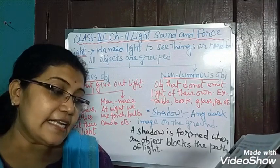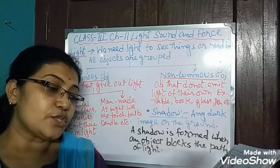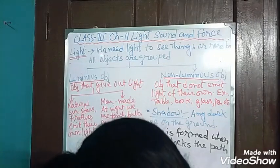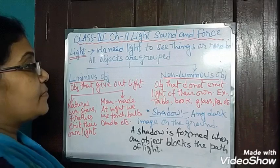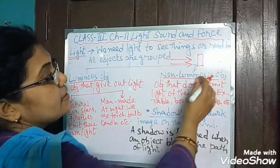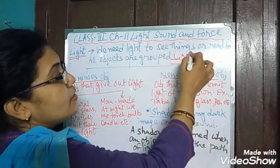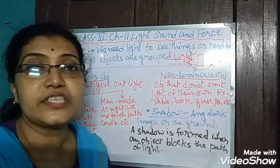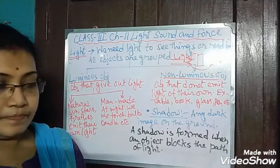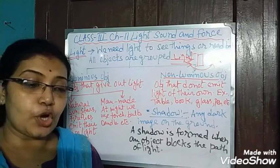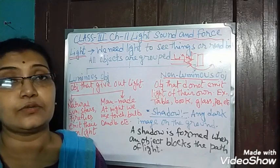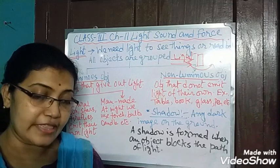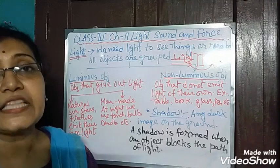Light does not require any medium to travel. A shadow is always formed on the opposite side of the light source. When light travels in a straight path and something blocks it, the shadow is created on the opposite side. The size of the shadow may be short or long depending on the position of the light source. In the morning and evening, when the sun is at the horizon, the shadow is long; at noon, when the sun is overhead, the shadow is short.